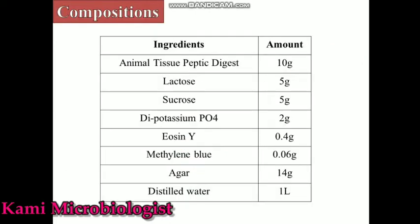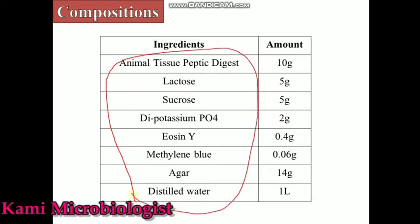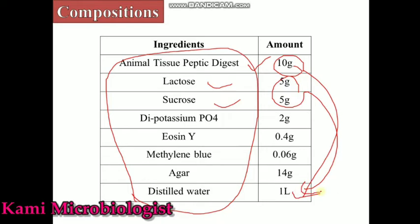Now let's talk about the composition of this media. The most important ingredients are: animal tissue peptic digest — 10 grams per liter; lactose and sucrose — 5 grams per liter; dipotassium phosphate (K₂HPO₄) — 2 grams per liter; eosin — 0.4 grams per liter; methylene blue — 0.06 grams per liter; agar — 14 grams per liter; and distilled water — 1 liter. These are the most important components of this media.